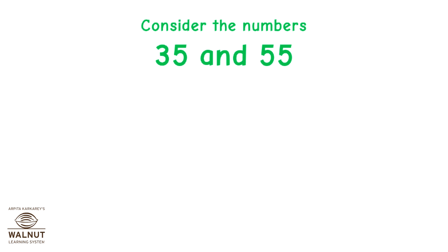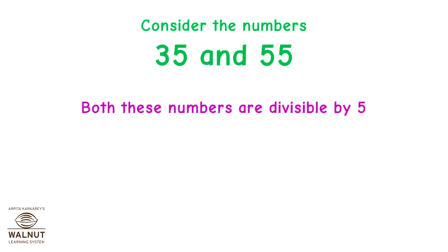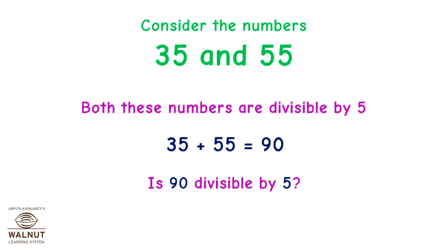Consider the numbers 35 and 55. Both these numbers are divisible by 5. 35 + 55 = 90. Is 90 divisible by 5? Yes.